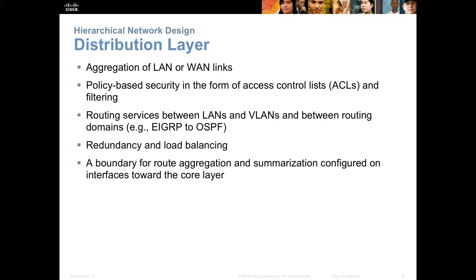Moving up to the distribution layer, it will aggregate the access layer switches. A single distribution layer switch might have 30 to 50 access layer switches connected to it, and then it will aggregate all that bandwidth into fewer higher-speed links. It will also implement access control lists and do layer three. The distribution layer is always layer three, so it involves routing protocols. We will have redundancy and load balancing, so anywhere I need one distribution layer switch I'll install two of them to alleviate any single point of failure. This is a boundary for route aggregation and summarization before going on to the core.